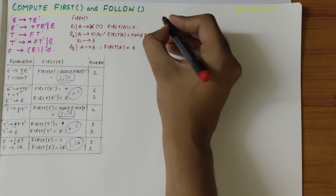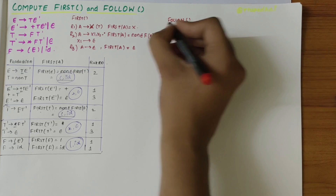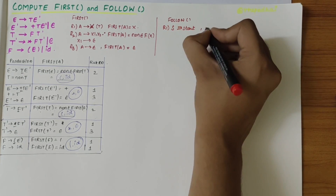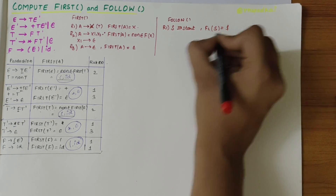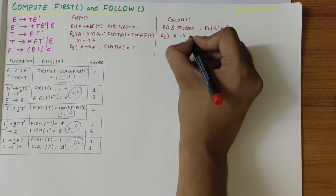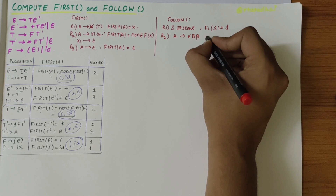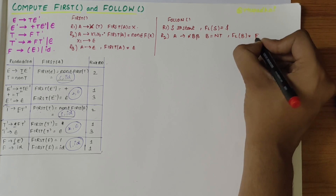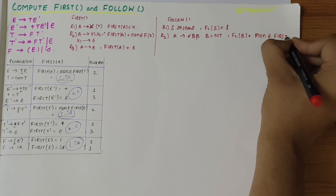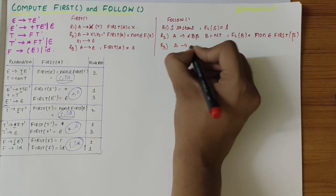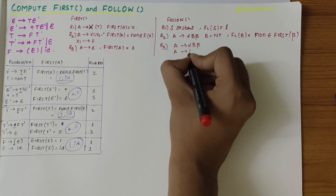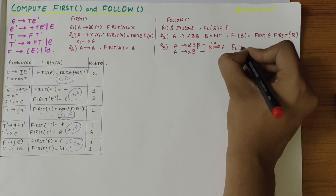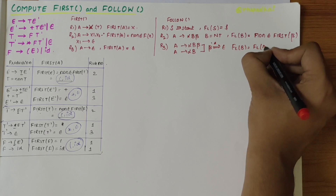Now let's compute FOLLOW. Rule one: for the start symbol S, follow of S is dollar. Rule two: if the production is of the form A derives alpha B beta and B is a non-terminal, then follow of B is equal to non-epsilon first of beta. Rule three: if A derives alpha B beta and beta derives epsilon, or A derives alpha B, then follow of B includes follow of A.